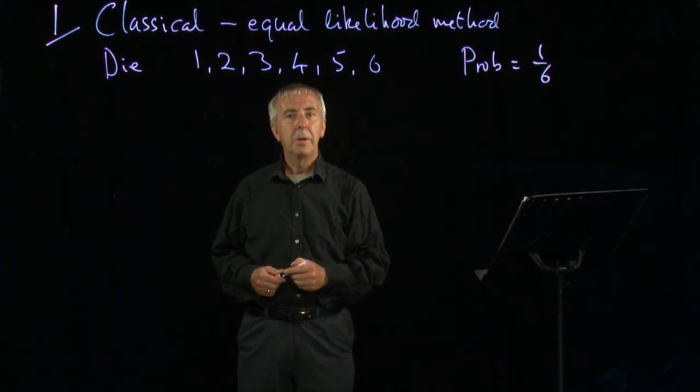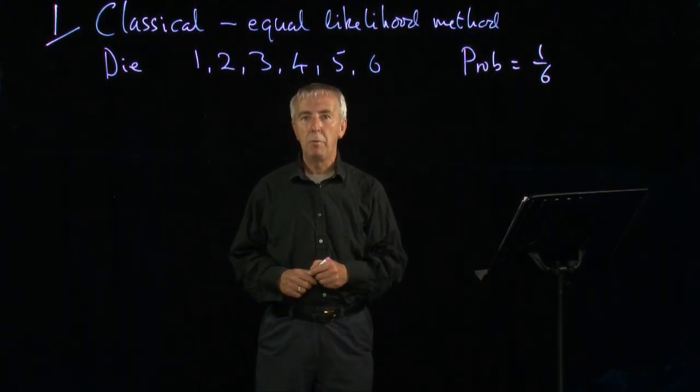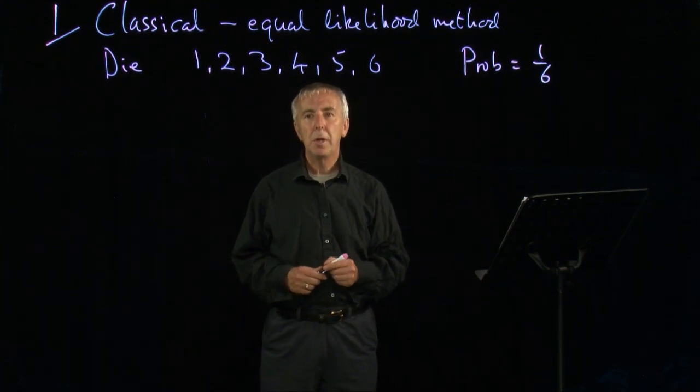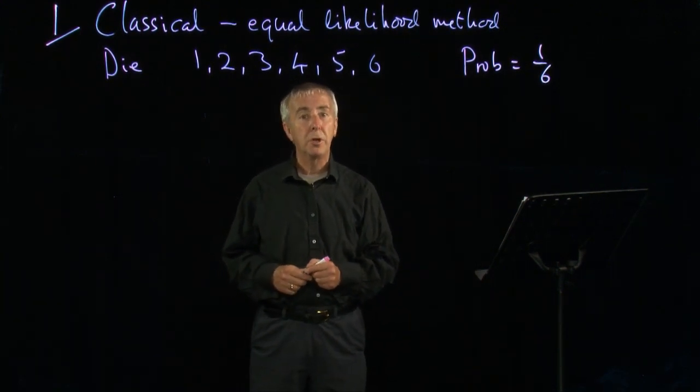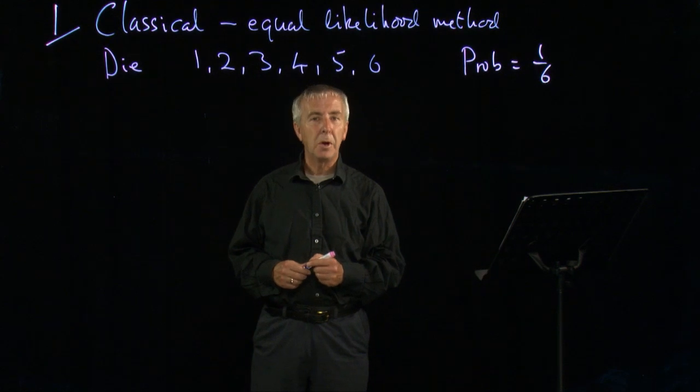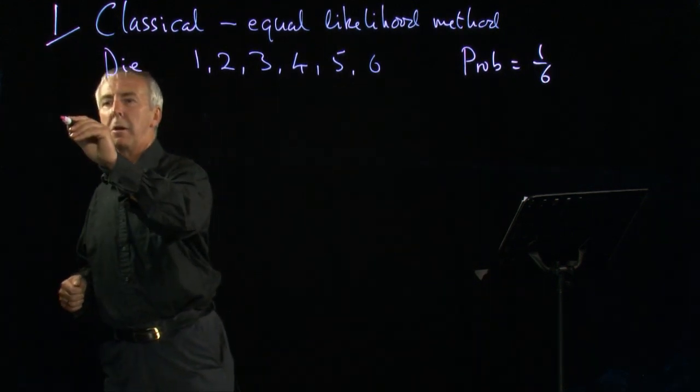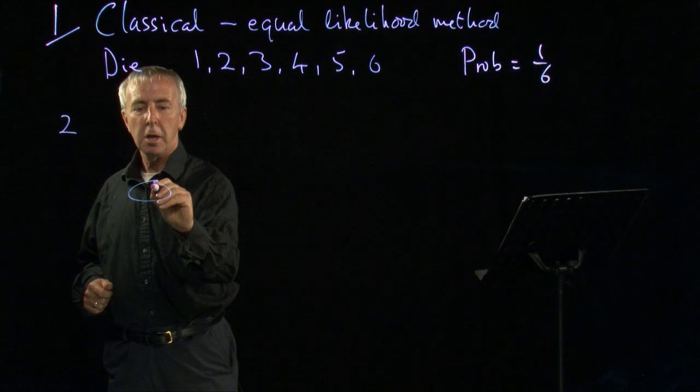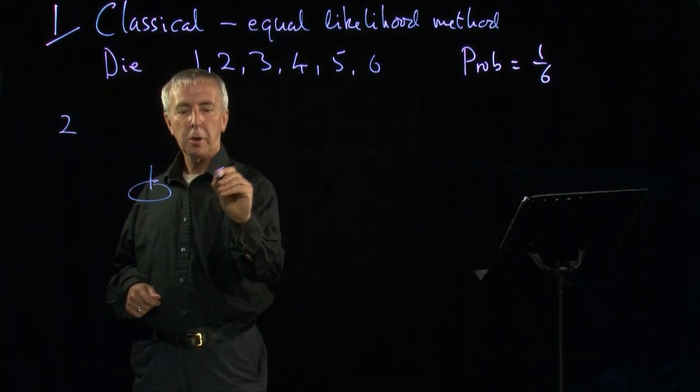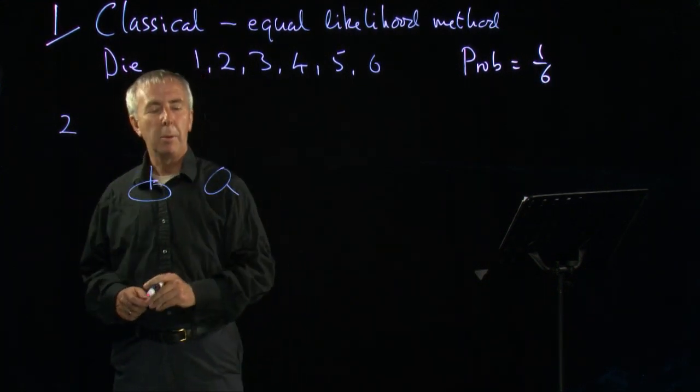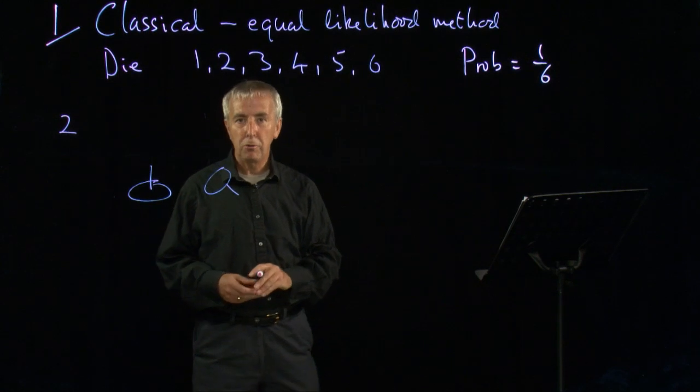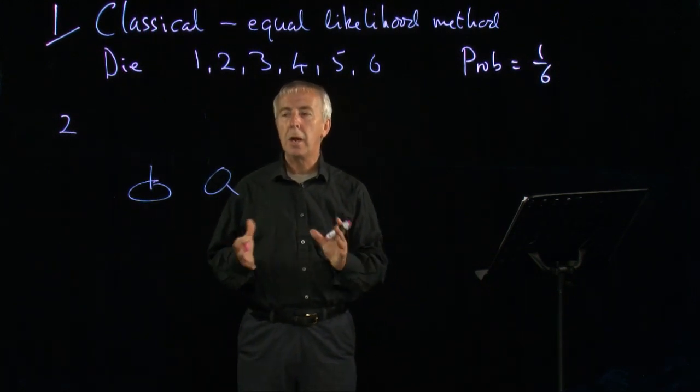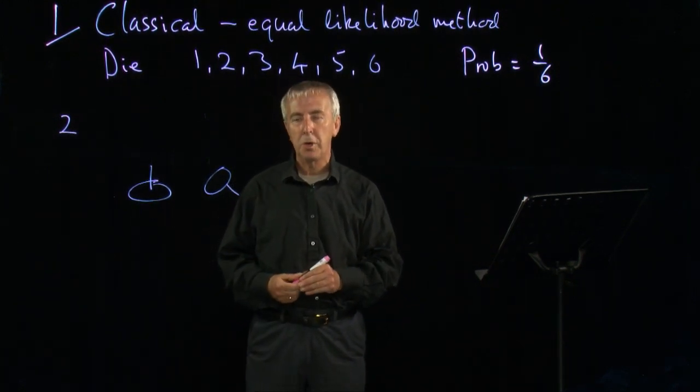However, some things don't have equal probabilities. If we think, for example, about tossing a drawing pin instead of a die, the drawing pin can land this way up, or it can land that way up, and they are not symmetrical. They're not equally likely because it's a very unsymmetrical object.